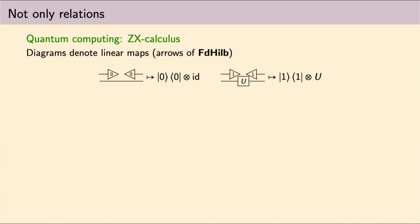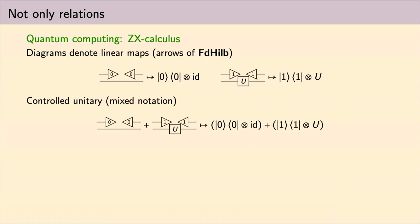In which diagrams like this, well, here I use a little bit of a syntactic sugar, but diagrams like this denote linear maps, which are the arrows of the category of finite dimensional Hilbert spaces and linear maps between them. Now, FdHilb is a monoidal category. I can compose this diagram in parallel and get the tensor product of the two linear maps. But in this specific case, I could take the sum of these two diagrams and so the sum of the linear maps they represent. And if U is a unitary, this would give me a representation of a controlled unitary.